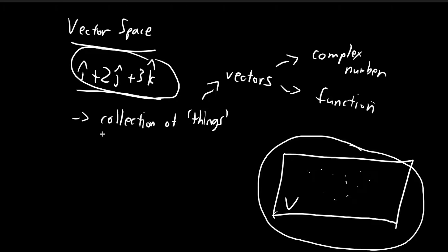I've given an intuitive description of a vector space as a collection of things, but not all collections of mathematical objects are qualified to be a vector space. In order to be qualified as a vector space, your set of mathematical objects must satisfy certain properties. Only then will the set be called a vector space, and the objects inside will be called vectors. For the rest of this video, I'm going to talk about the conditions that enable such a set to be qualified as a vector space.